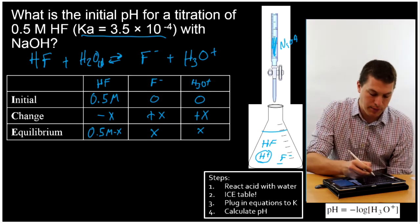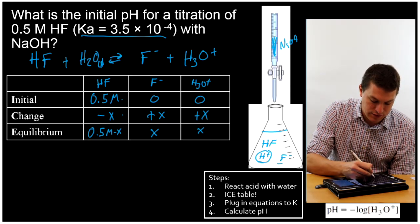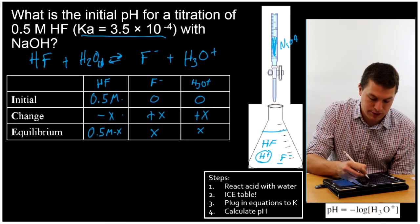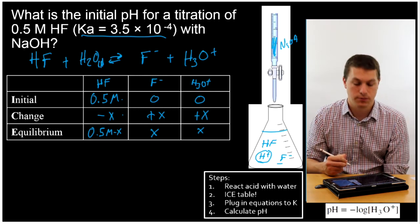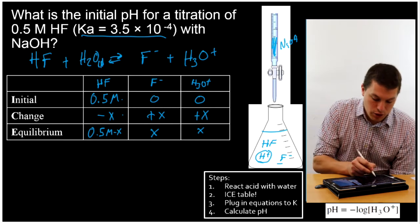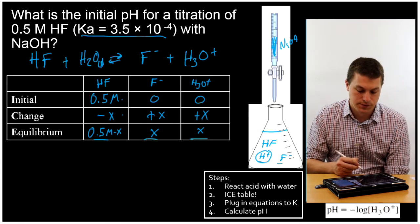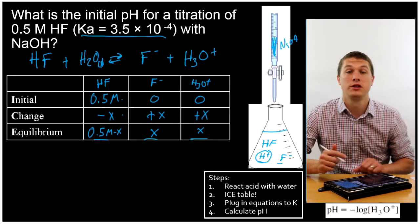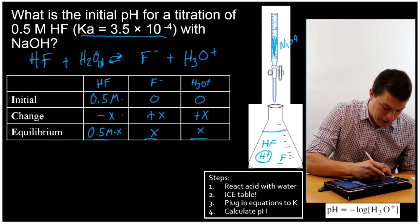So that I get by just adding these two. So 0.5 minus X gives me what I have at equilibrium. 0 plus X gives me what I have at equilibrium. So now I know an equation for my equilibrium concentrations of each of those. And what I'm going to do is I'm going to plug that into an expression for K, but first let's write our expression for K.